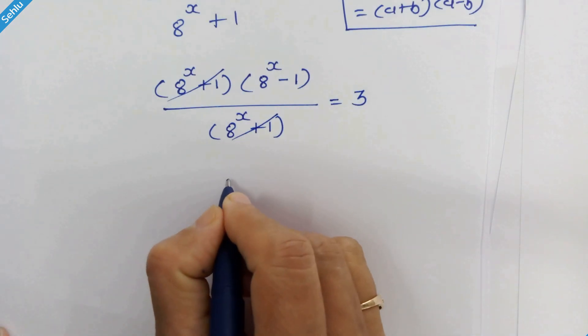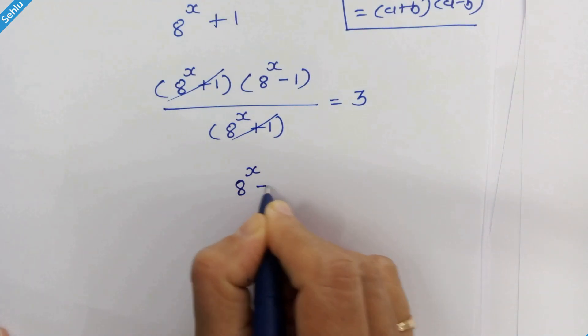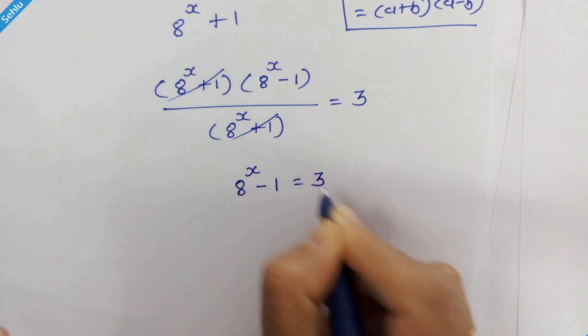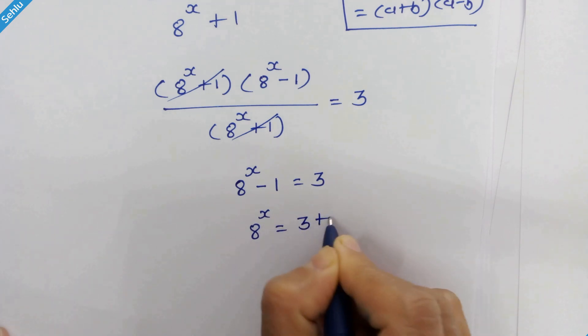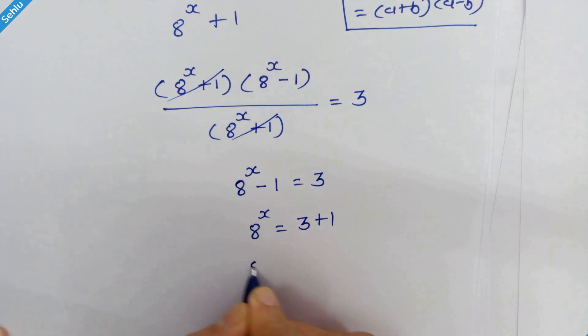So in the next step, we have 8 raised to x minus 1 is equal to 3. So 8 raised to x is equal to 3 plus 1. So 8 raised to x is equal to 4.